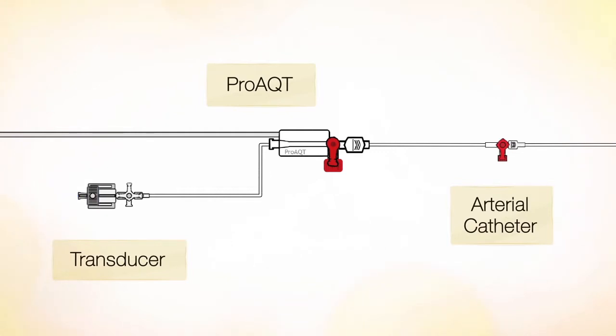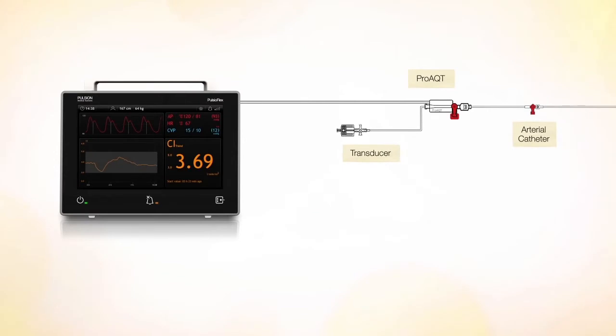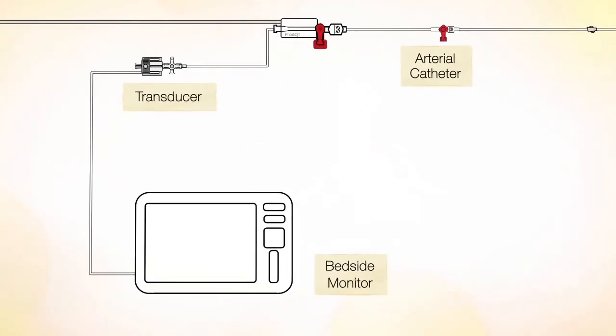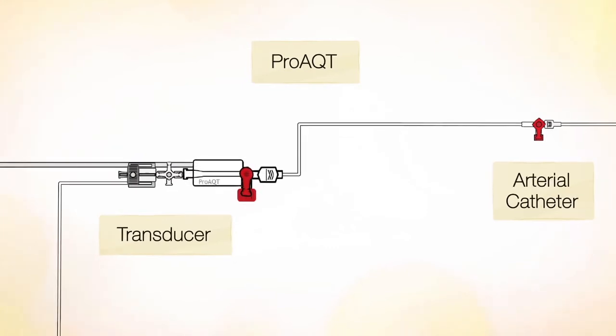Connect the Proact Sensor to the Pulseoflex monitor. Connect the standard transducer to the bedside monitor. You can connect the Proact Sensor either next to the pressure transducer or right on top of it.